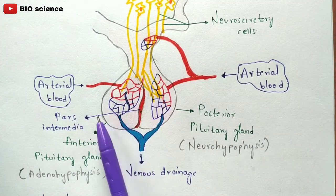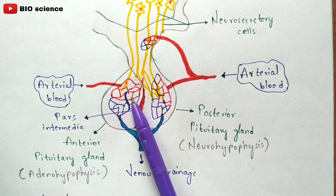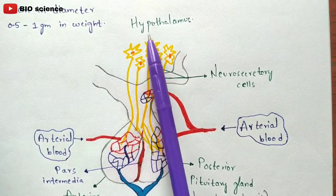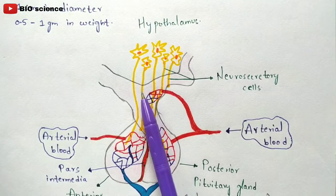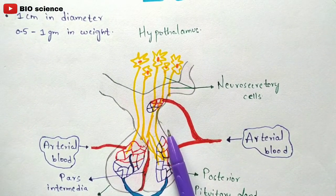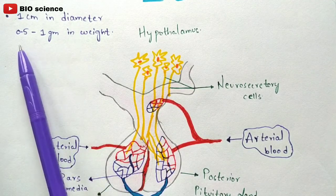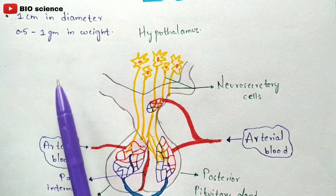This pituitary gland is present below the hypothalamus. As you can see, this is the region of the hypothalamus, and below this hypothalamus the pituitary gland will be present. Coming to the size, it is one centimeter in diameter and 0.5 to 1 gram in weight.